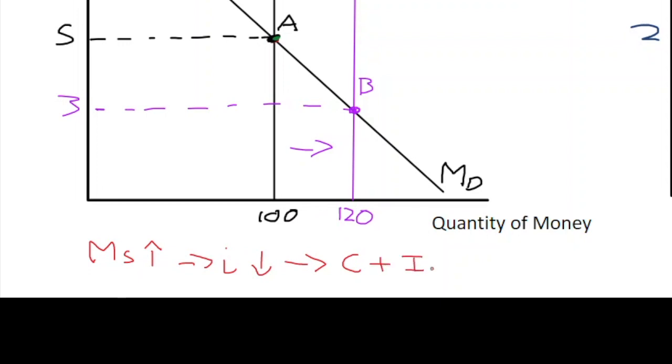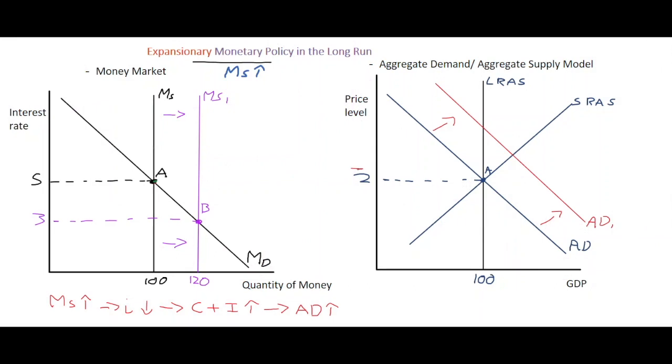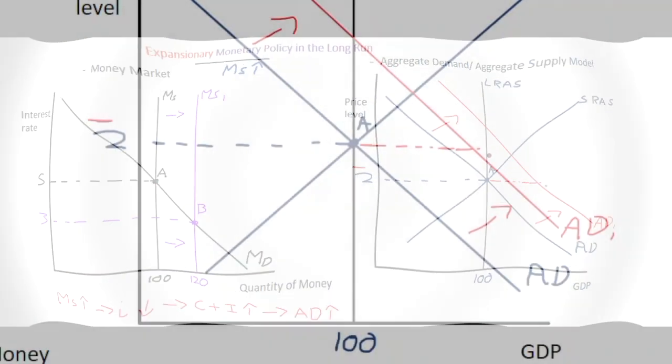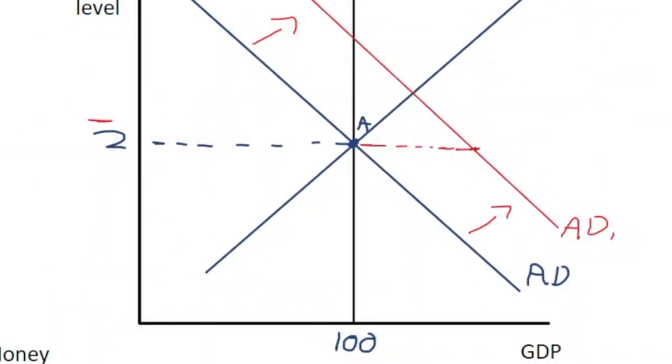...and interest-sensitive expenditure elements such as consumption and investment tend to increase as the cost of borrowing goes down. In this case, as they increase they're a part of aggregate demand and expenditure, so aggregate demand increases or shifts to the right with a constant price level here. So we have a rightward shift at the exact same price level.